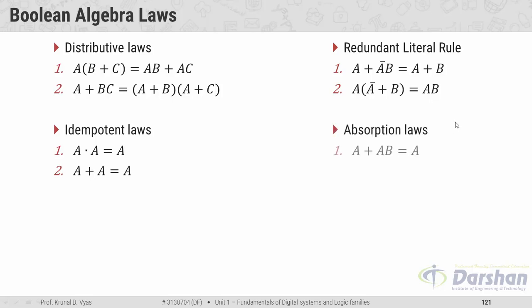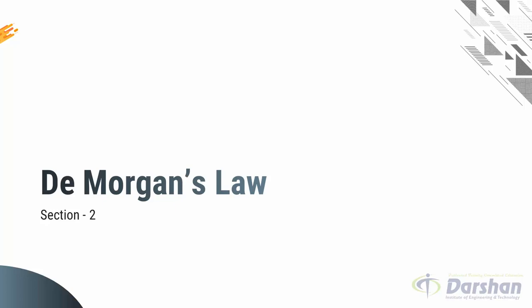The absorption law: A + AB equals A. We factor out A to get A·(1 + B); since 1 + B equals 1, the final answer is A. The second absorption law is A·(A + B): applying the first distributive law gives A·A + A·B, which simplifies to A + AB, and by the first absorption law this equals A.